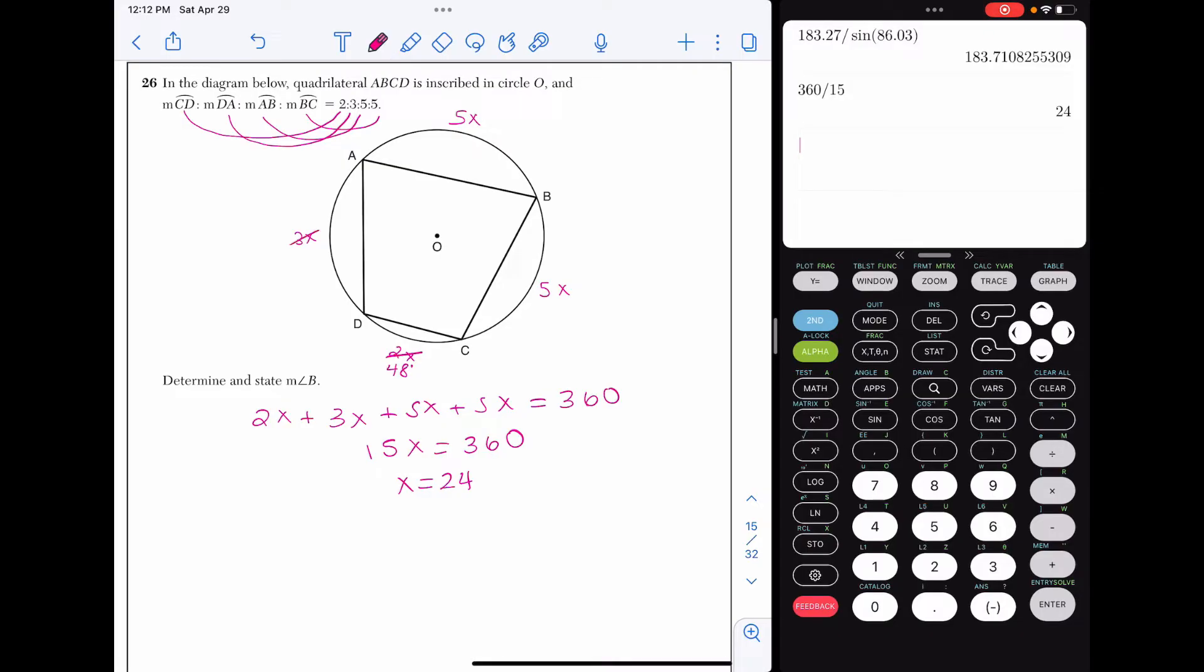The 3x is really going to be 72 degrees. I'm just plugging in 24 in for x in order to get that arc measure. The remaining two arcs, they are equal to each other. And when I plug 24 in, I get 120 for each of them.